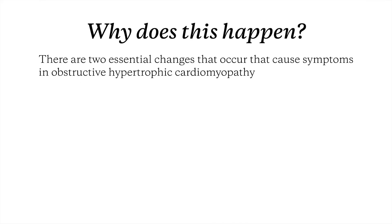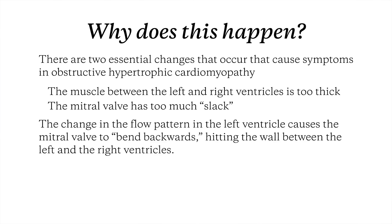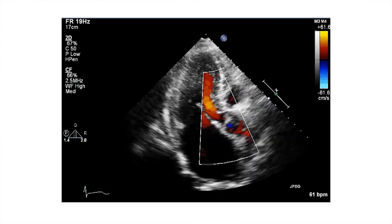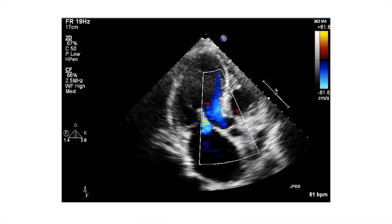What happens in common in all of them is that there are two things that have changed. The hypertrophic — or the thickening — of the heart muscle, plus the mitral valve being too long or having too much slack in it, creates a change in the flow pattern such that the mitral valve bends over backwards, as I showed you in the image, and obstructs the flow of blood.